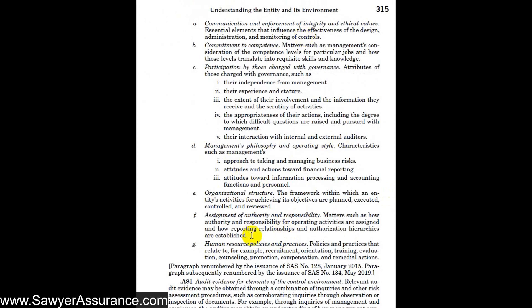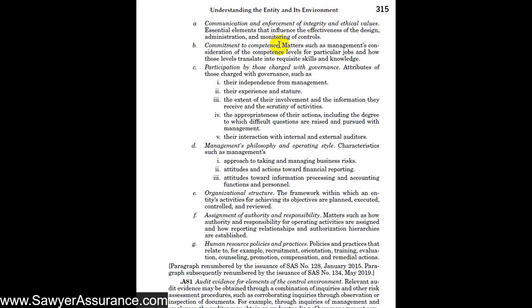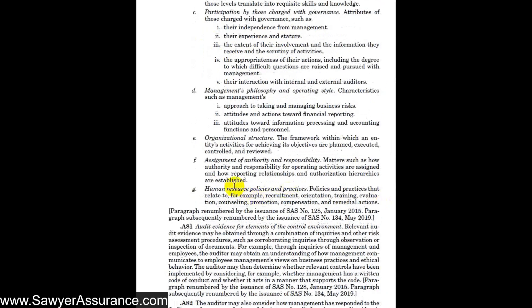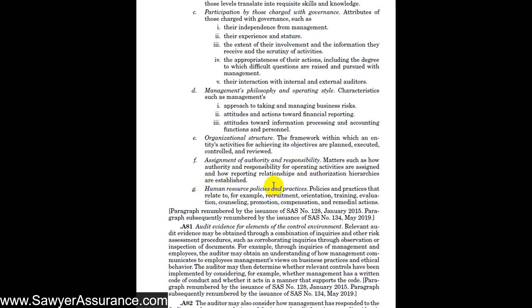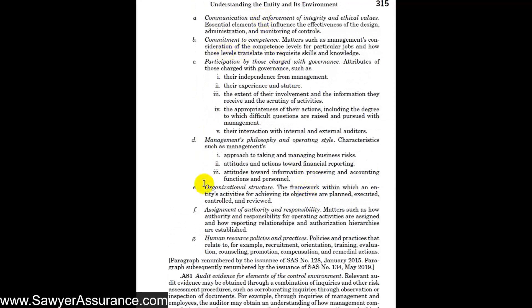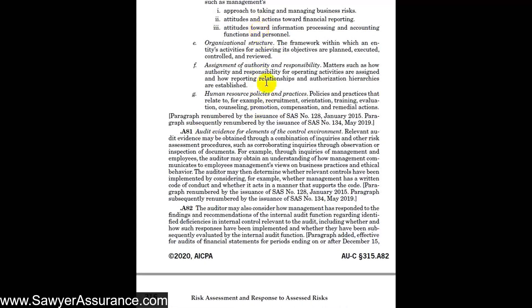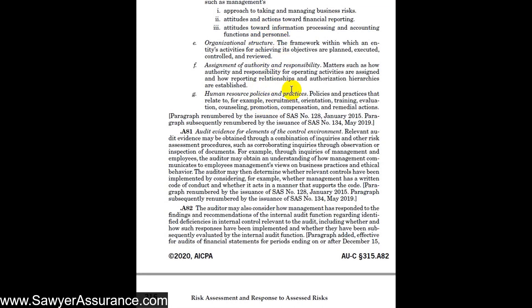We can think of things that management or governance might set up to promote these elements. For example, maybe there's a monthly meeting with staff to promote communication, or a tip hotline for any wrongdoings at the company. Perhaps they set up learning schemes or ways for staff to gain education and do their job well. Maybe they have an organizational structure that ensures things are planned, executed, and reviewed. Human resource policies might ensure that ethical, competent people are hired. The type of evidence we might gather to verify the implementation and design of the control environment might include inquiries.